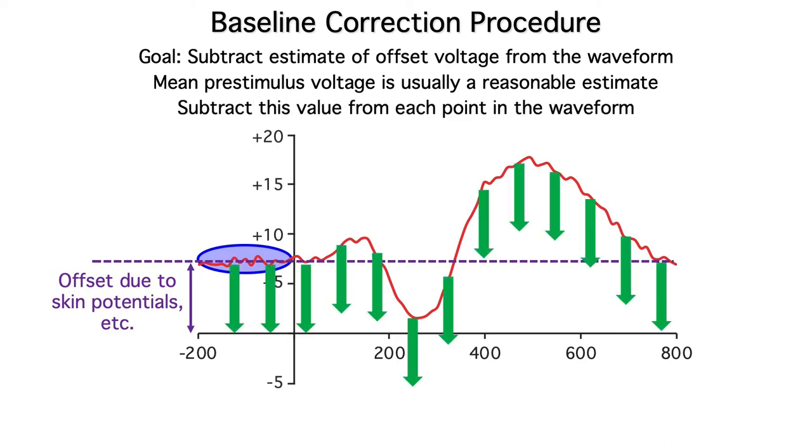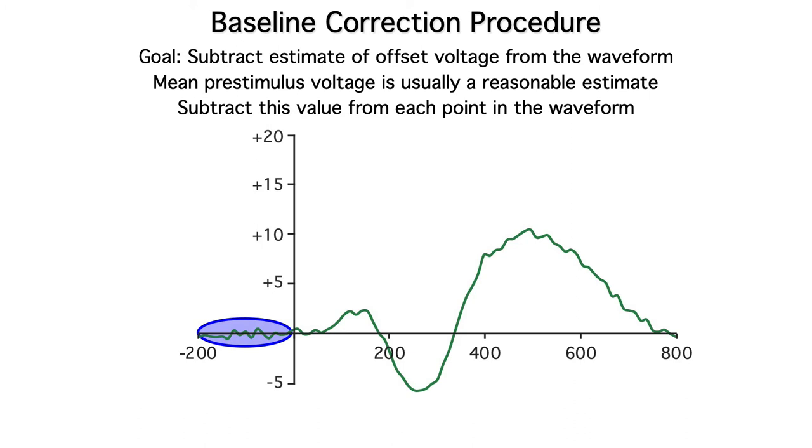We then subtract that mean pre-stimulus voltage from every point in the waveform, causing the whole waveform to shift downward. Now the average pre-stimulus voltage is hovering around 0. This seems pretty straightforward. What could possibly go wrong?